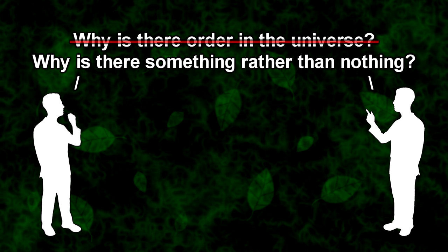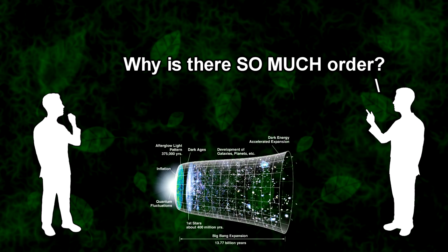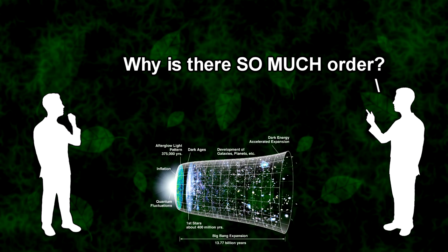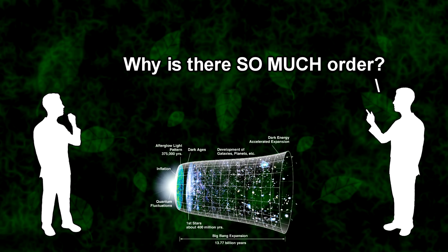At this point, the apologist might concede that some amount of order is necessary, but they could still argue that the amount of order we see in our universe is rather high, and that this high amount of order cries out for an explanation.